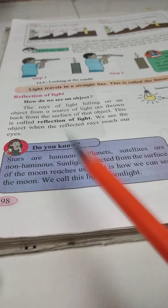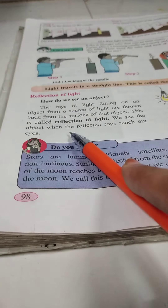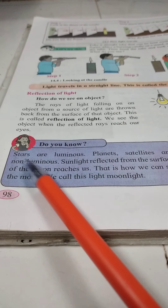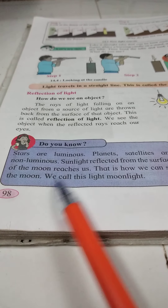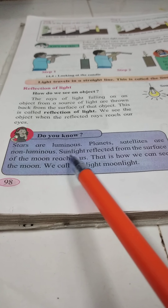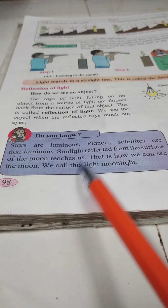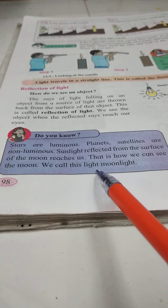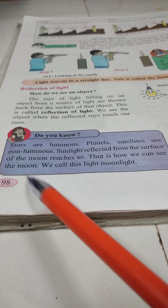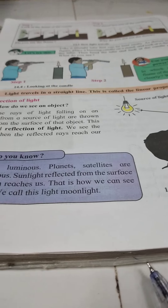Always remember these two things: stars are luminous, while planets and satellites are non-luminous. Light reflected from the surface of the moon reaches us — that is how we can see the moon. We call this light moonlight.